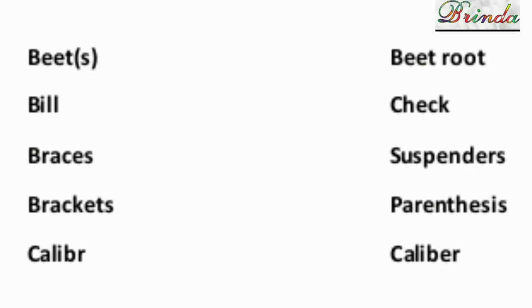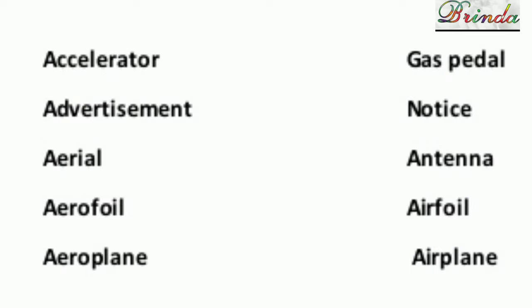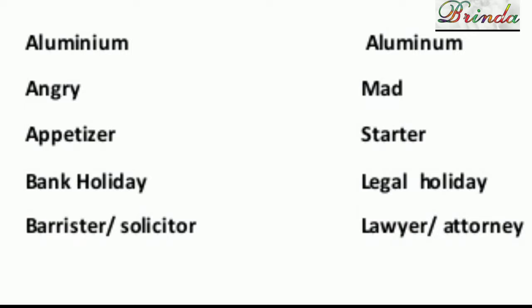Beetroot is British English; beet or beet root is American English. Bill is British English; check is American English — used in restaurants. Braces is British English; suspenders is American English. Brackets is British English; parentheses is American English. Caliber — spelling difference. Car park versus parking lot. Caravan is British English; trailer is American English. Caretaker is British English; janitor is American English. Carpet is British English; rug is American English. Catalogue — spelling alone changes. Accelerator is British English; gas pedal is American English. Advertisement versus notice. Aerial is British English; antenna is American English.